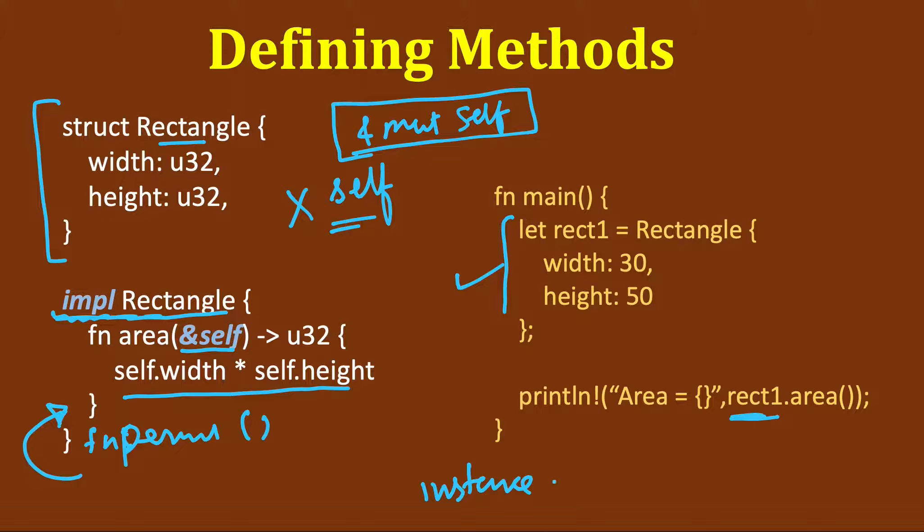Instance followed by a dot, and then the method name. So instead of function, I am writing method here. And the first parameter, you see that here it was self, but we are not passing it here.